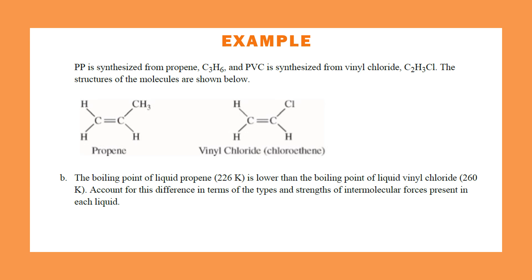Polypropylene is synthesized from propene and polyvinyl chloride from vinyl chloride. The boiling point of propene is 226 K, lower than vinyl chloride at 260 K. Account for the differences in terms of types and strengths of intermolecular forces present in each liquid.